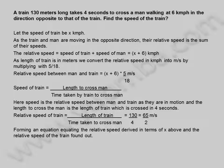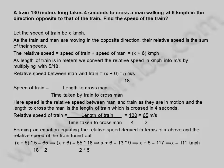Forming an equation equating the relative speed derived in terms of x above and the relative speed of the train found out: x plus 6 into 5 divided by 18 is equal to 65 divided by 2. This implies x plus 6 is equal to 65 into 18 divided by 2 into 5, which gives x plus 6 equal to 13 into 9, equal to 117. Therefore x is equal to 111 kilometers per hour. The speed of the train is 111 kilometers per hour.